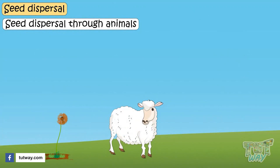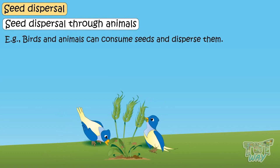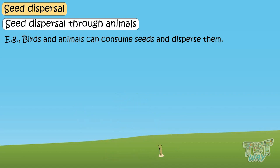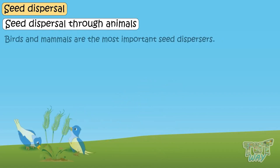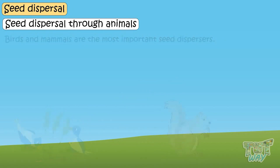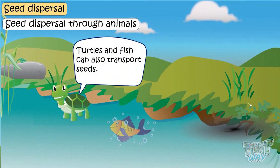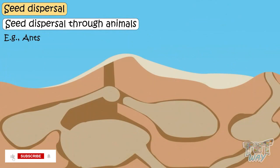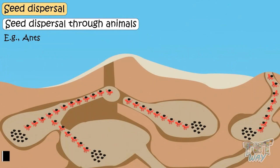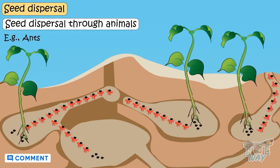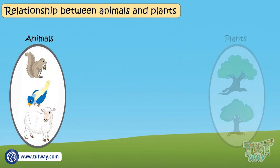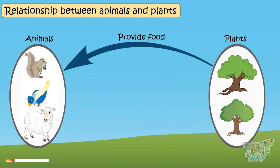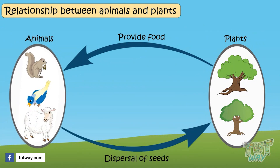Animals can disperse plant seeds in several ways. Seeds may get attached to animal fur. Birds and animals can consume seeds which are then dispersed by means of waste removed from their body. Birds and mammals are the most important seed dispersers, but a wide variety of other animals, including turtles and fish, can also transport seeds. Ants carry seeds into their colonies and feed on some of them, leaving some seeds in an underground chamber where they can germinate into new plants. So there is a relationship between animals and plants — plants provide food to animals, and animals help disperse the seeds of plants to distant and different locations.